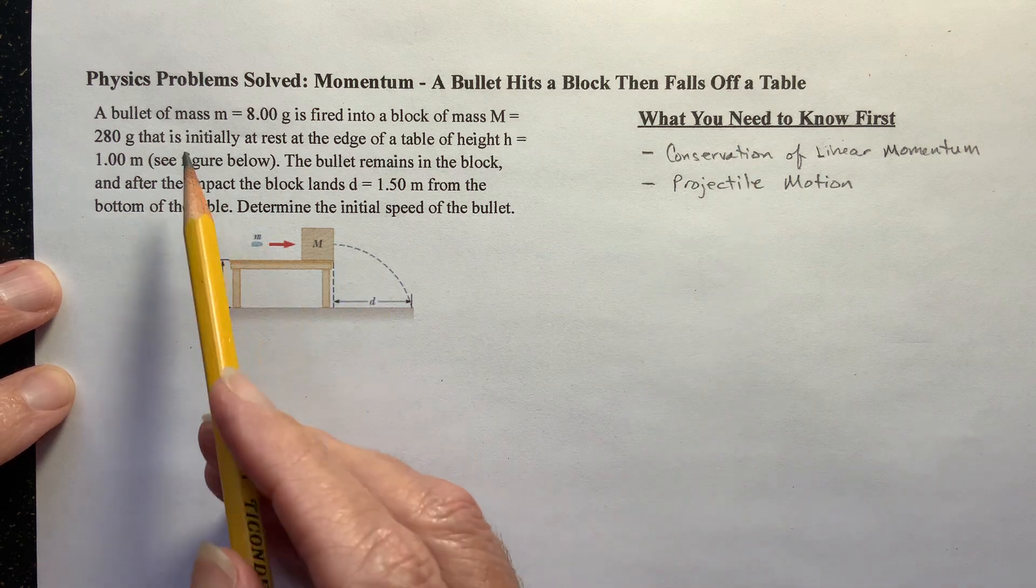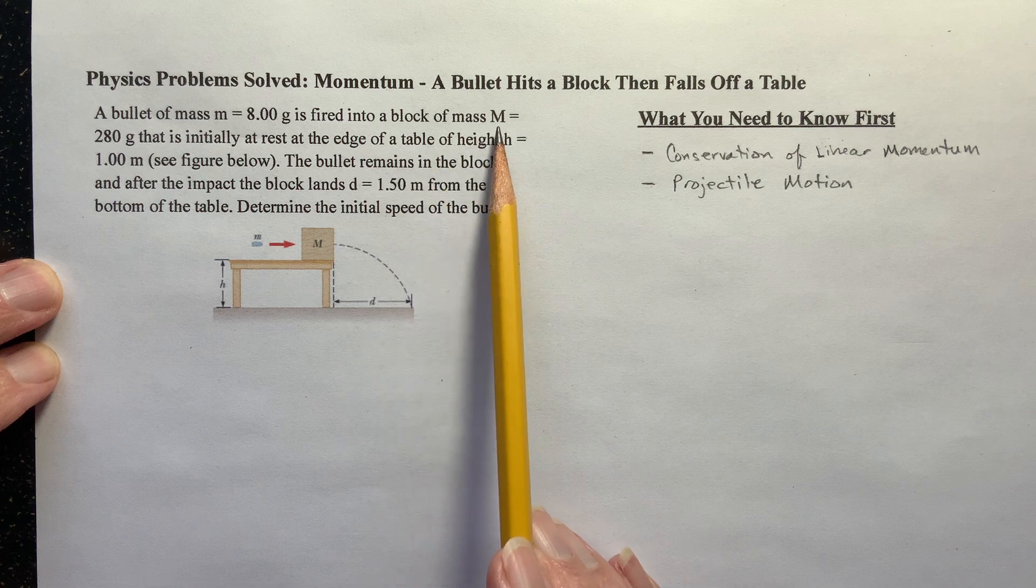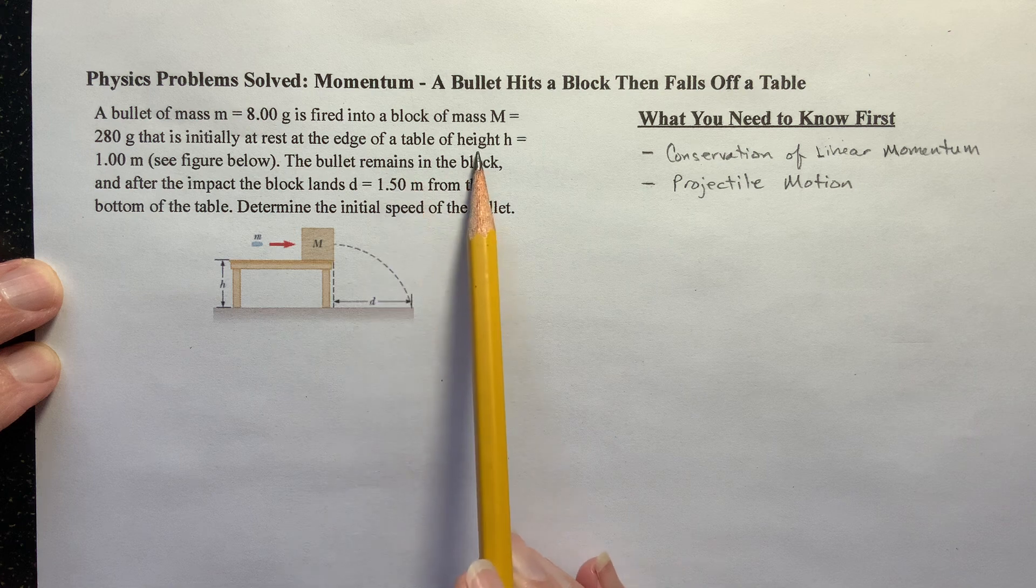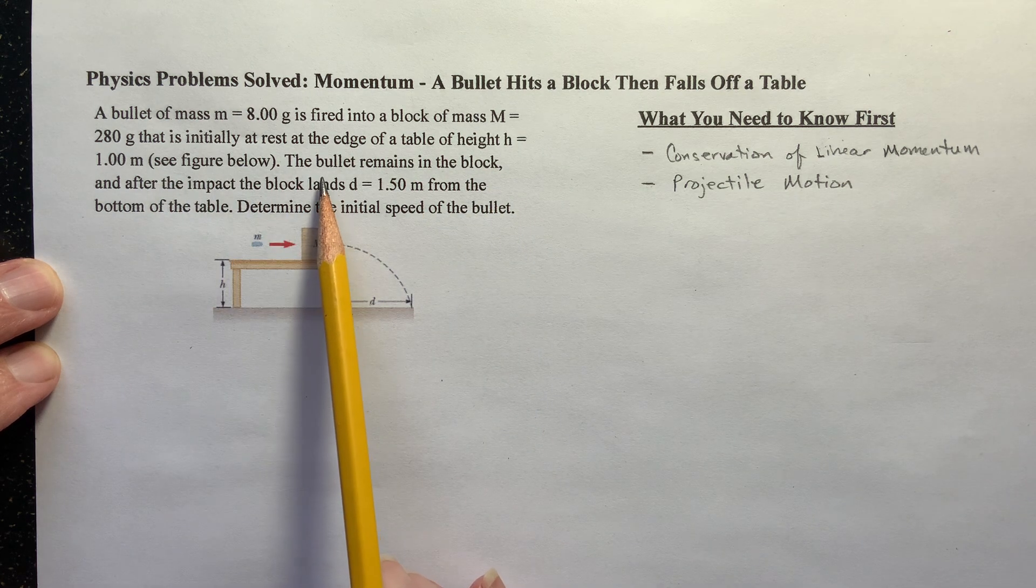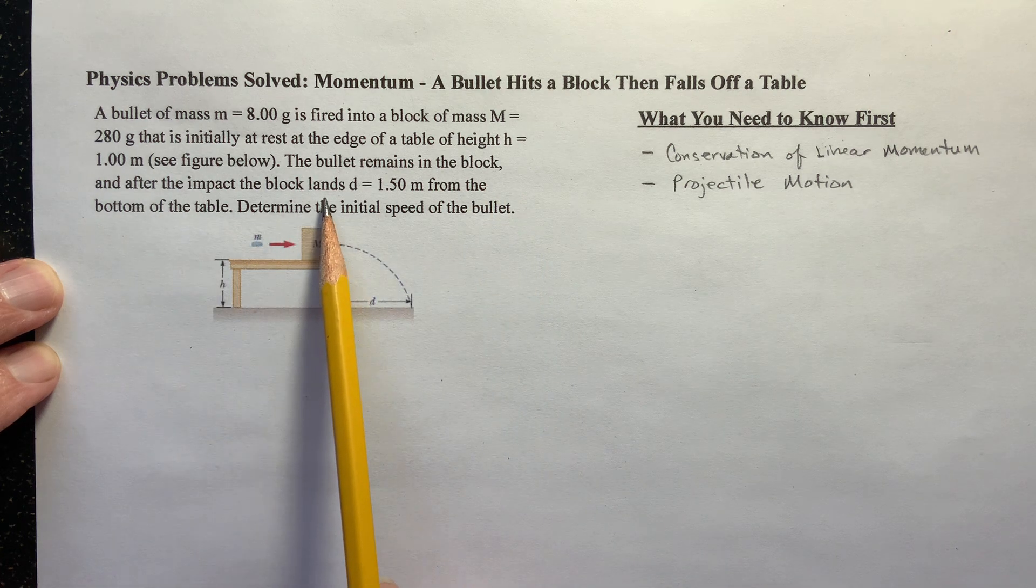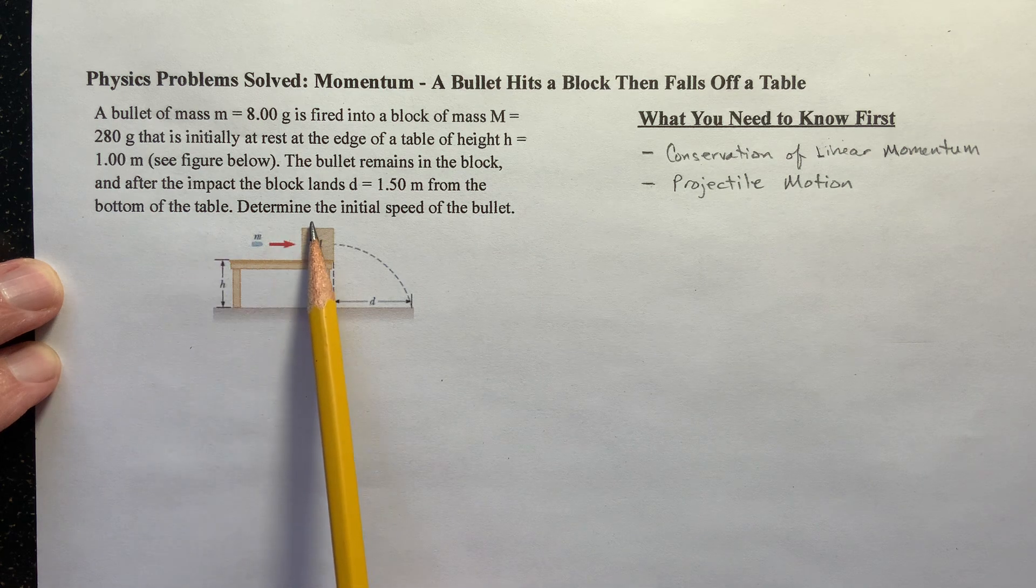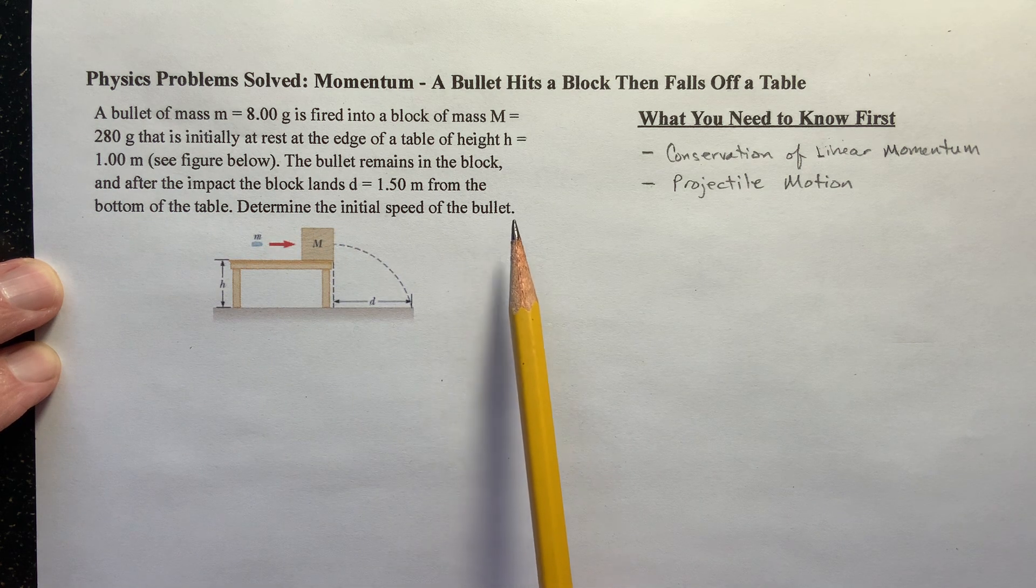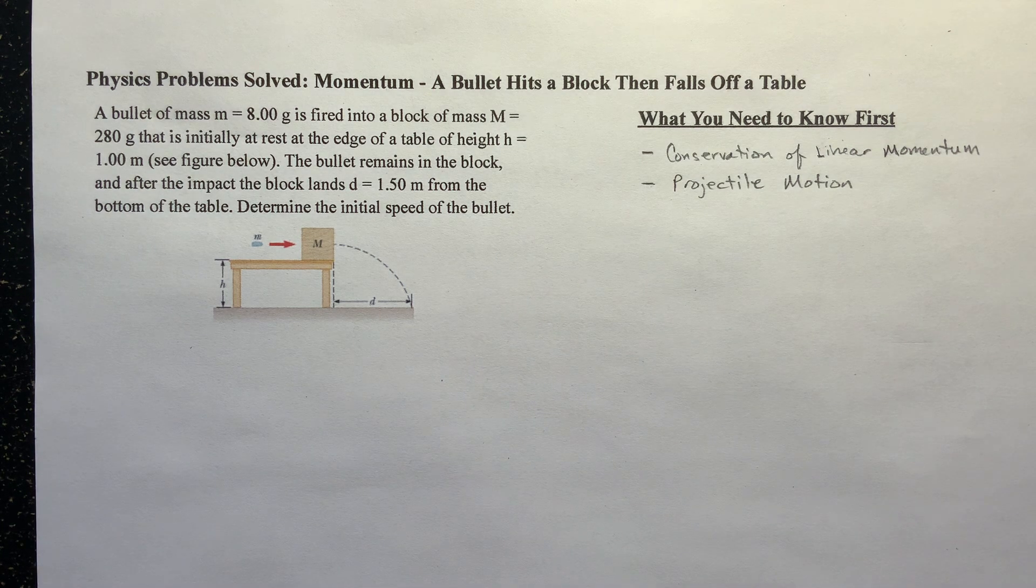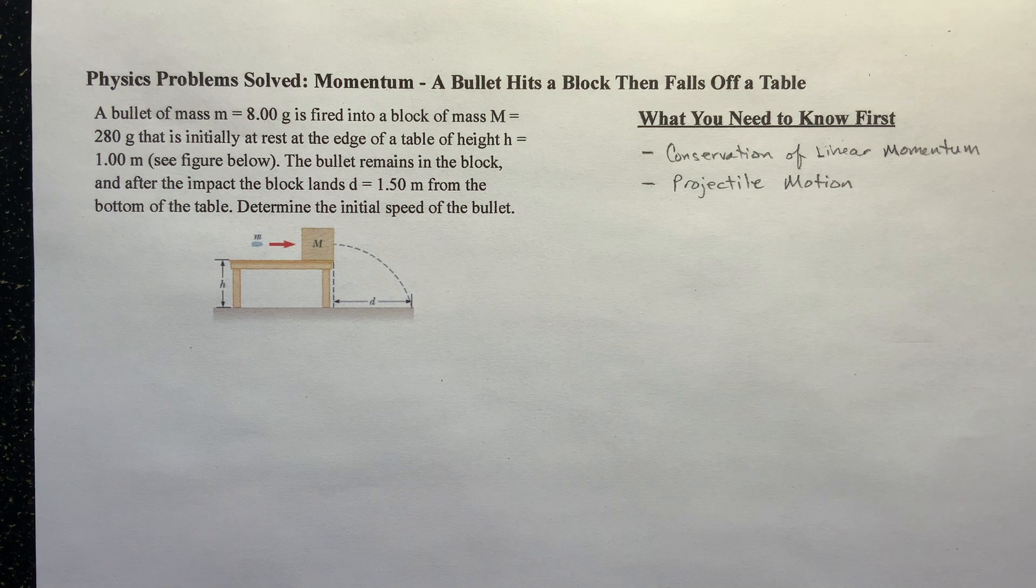We've got a bullet with a mass of 8 grams fired into a block of mass 280 grams that is initially at rest on the edge of a table of height h equals 1 meter. The bullet remains in the block, and after the impact the block lands d equals 1.5 meters from the bottom of the table. Determine the initial speed of the bullet. This is a classic physics problem and one that you are very likely to see on an AP test or an exam.